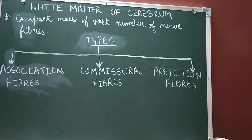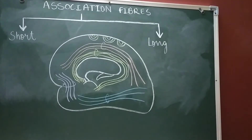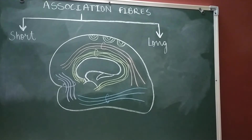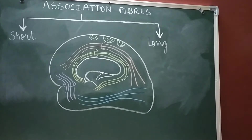First of all, let's discuss about the association fibers. As the name indicates, these fibers interconnect the different regions of the cerebral cortex in the same hemisphere. These are the fiber groups which connect different regions within the same cerebral hemisphere, and thus they are also termed as the intra-hemispheric fibers. 'Intra' means within the hemisphere — they connect the different regions.